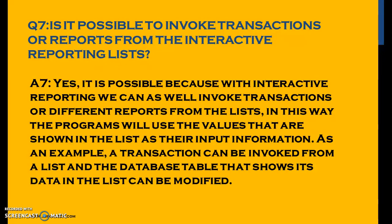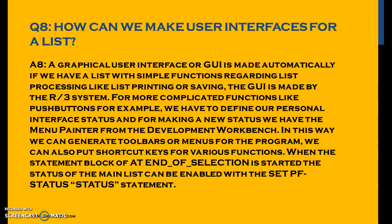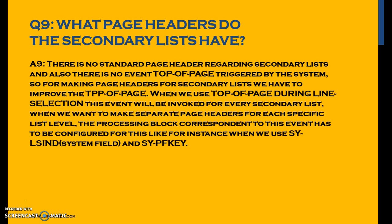How can we make user interfaces for a list? A graphical user interface (GUI) is made automatically if we have a list with simple functions like list printing or saving. For more complicated functions like push buttons, we have to define our own interface status using the Menu Painter from the development workbench. This allows us to generate toolbars or menus, and add shortcut keys. When AT END OF SELECTION starts, the status of the main list can be enabled with the SET PF-STATUS statement.